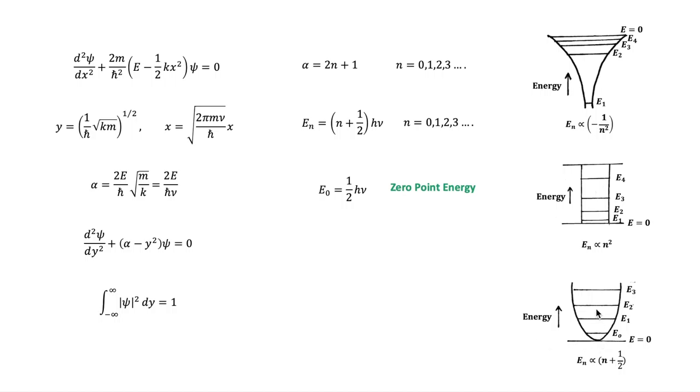The energy levels of a simple harmonic oscillator are evenly spaced. The figure here shows a comparison of the energy levels of a simple harmonic oscillator with those of a hydrogen atom and of a particle in a box with infinite walls. The figure also shows the shapes of the potential energy curves.